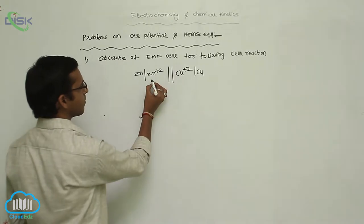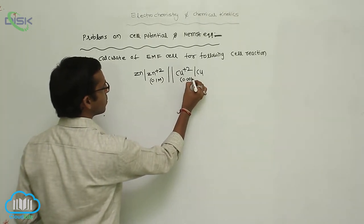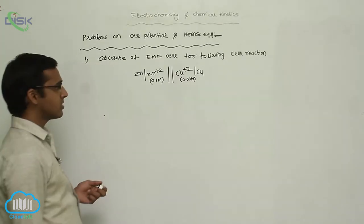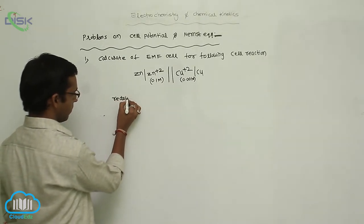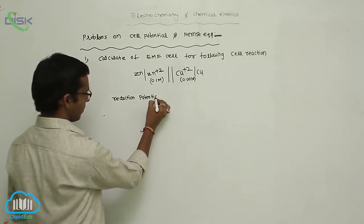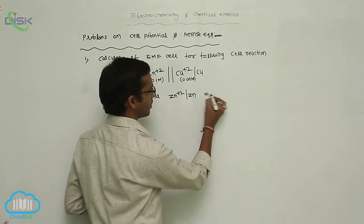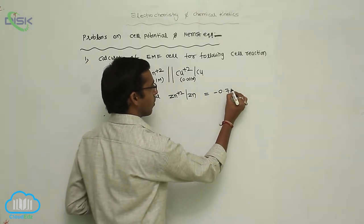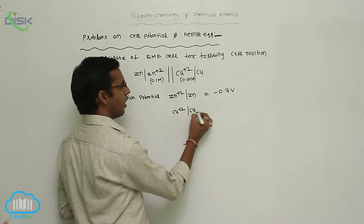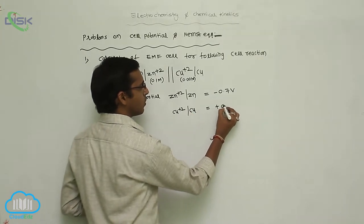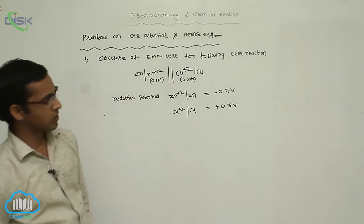In this reaction, the Zn²⁺ concentration is 0.1 M and the Cu²⁺ metallic ion concentration is 0.001 M. The standard reduction potential values given are: for Zn²⁺/Zn, the reduction potential is minus 0.76 volt, and for Cu²⁺/Cu, the reduction potential is plus 0.34 volt. This is the problem for calculation of EMF cell or cell potential.